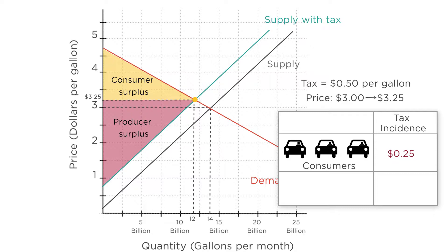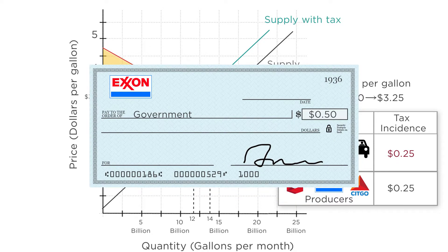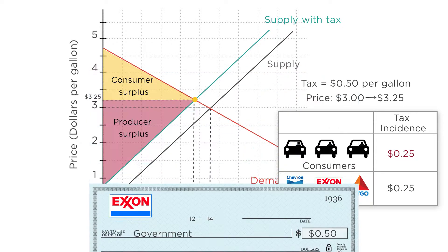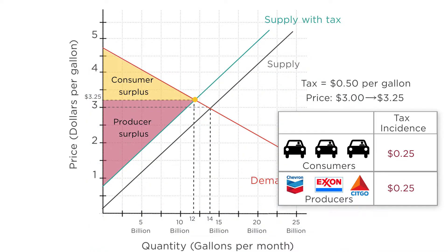But producers also bear some of the tax. They get $0.25 more per gallon compared to the $3 per gallon they were getting before the tax, but they also have to send a check to the government for $0.50 per gallon. So overall, they're $0.25 worse off per gallon — the $0.50 check they send minus the $0.25 extra they get from the higher price. So even though producers are the ones who pay the tax by sending a check to the government, the economic burden of the tax, or tax incidence, falls on both producers and consumers.